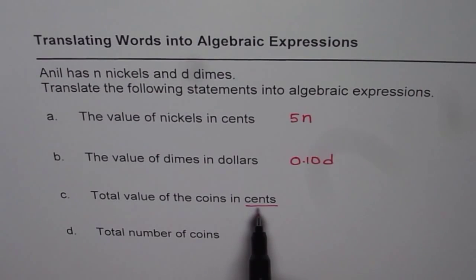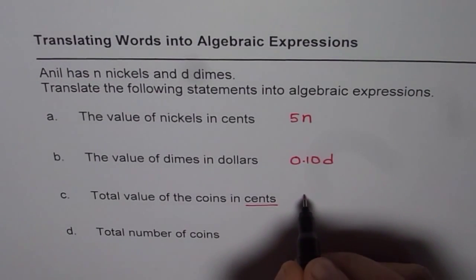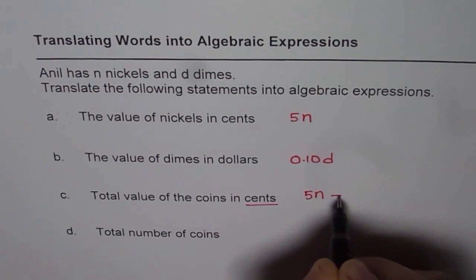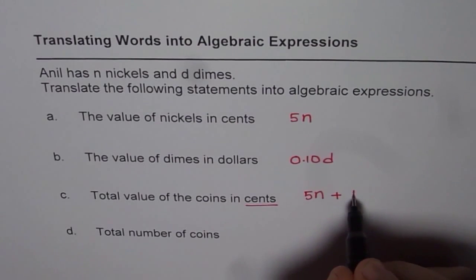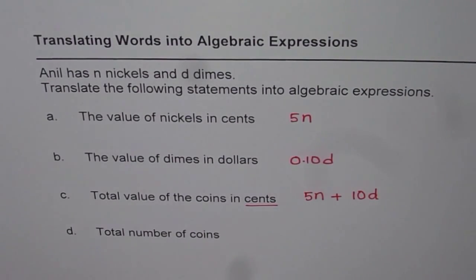So, the total value is how much? For the nickels, in cents, it is 5 cents. So we will write 5n. Plus, in dimes, we have 10 cents. So, 10d. That becomes the value for these coins in cents.